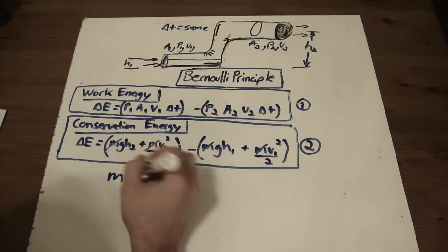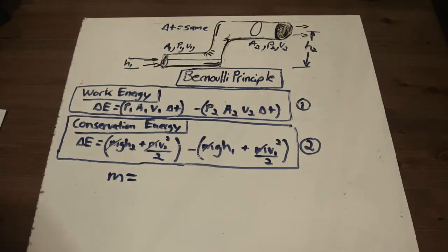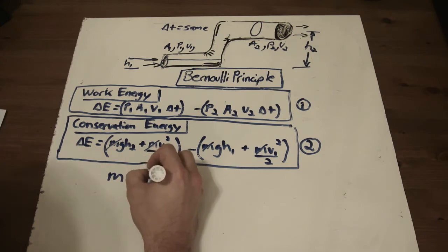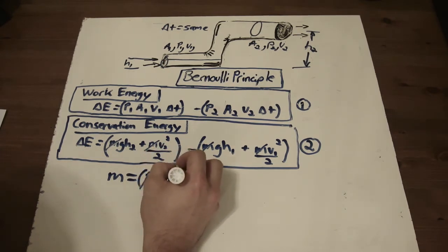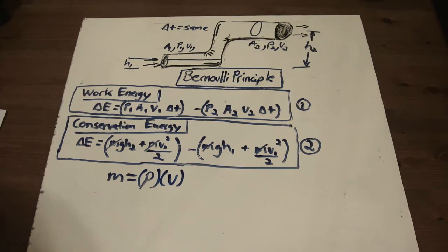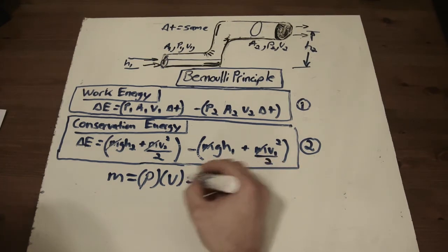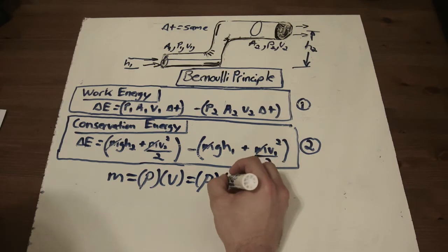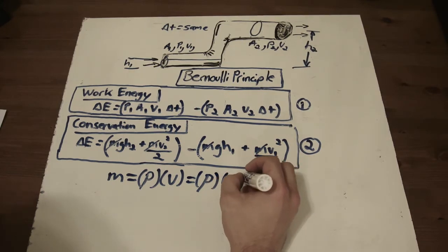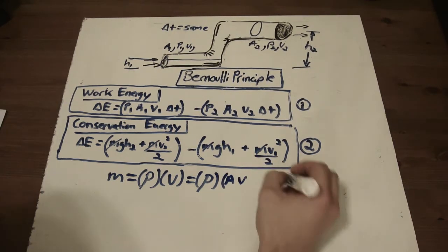So we want to cancel mass. What's something that mass is equal to that we can use in a creative way for fluid systems? Well, we can say that density times volume is equal to mass. You can also say density times, a tricky way of putting volume, which is going to be area times the velocity times a delta T.